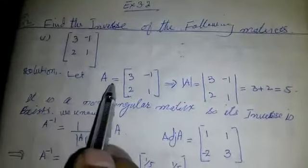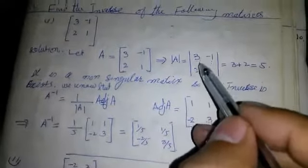Today we are going to solve Exercise 3.2, Question 2: find the inverse of the following matrices. Part 1: matrix A = [[3, -1], [2, 1]]. The determinant of A is equal to (3)(1) minus (-1)(2), which equals 3 + 2 = 5. It is a non-singular matrix, so its inverse exists.